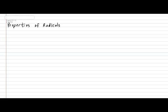Hi everyone, today we're going to be looking at properties of radicals. In your notebook, please put down the subtitle 'Properties of Radicals.' First things first — what is a radical? A radical is the actual name for what you might know as the square root symbol. Wherever you see the square root symbol, it's actually a radical. Now let's get some vocabulary out of the way.